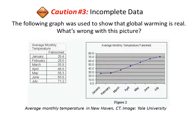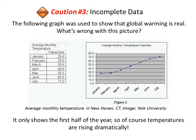The next caution is incomplete data. The following graph was used to show that global warming is real — but what's wrong with this picture? It only shows the first half of the year, so of course temperatures appear to be rising dramatically.